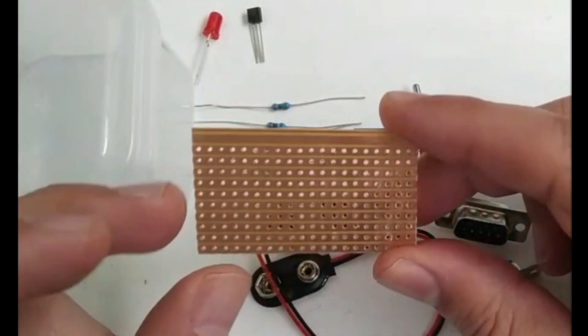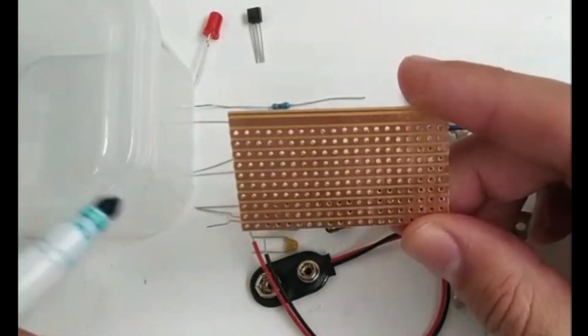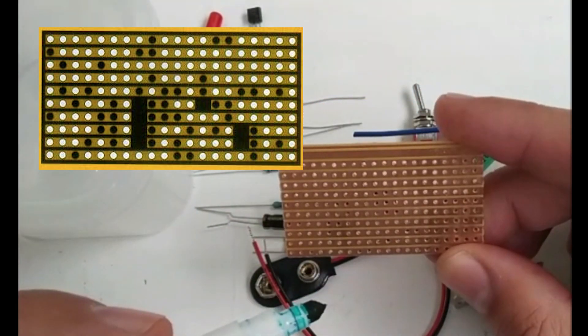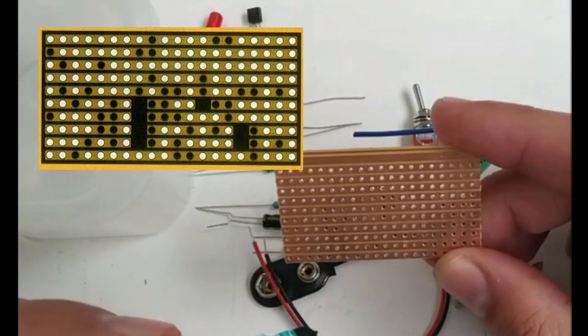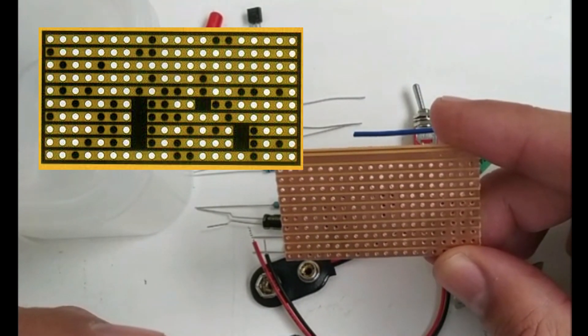So before I cut these tracks, I just want to mark the actual holes that I do need to cut. Now on the diagram, as you can see, there's the black components or the black parts, which are essentially the cut tracks. The black circles are the holes that are going to be used for the components and to be soldered, but the black strips or the black lines are the ones that I need to cut.